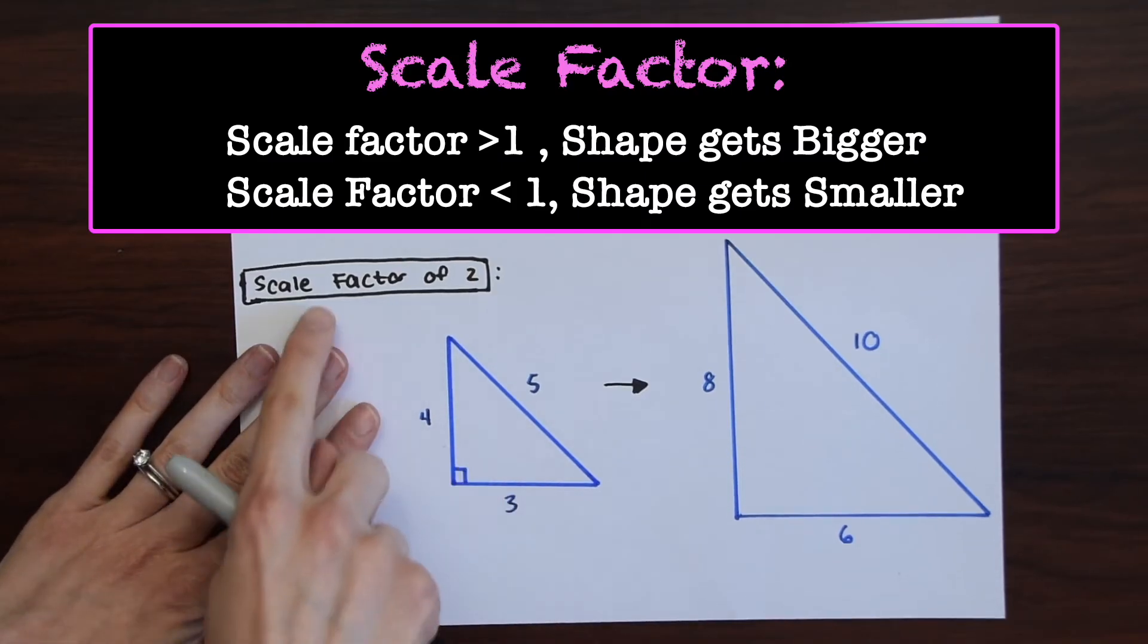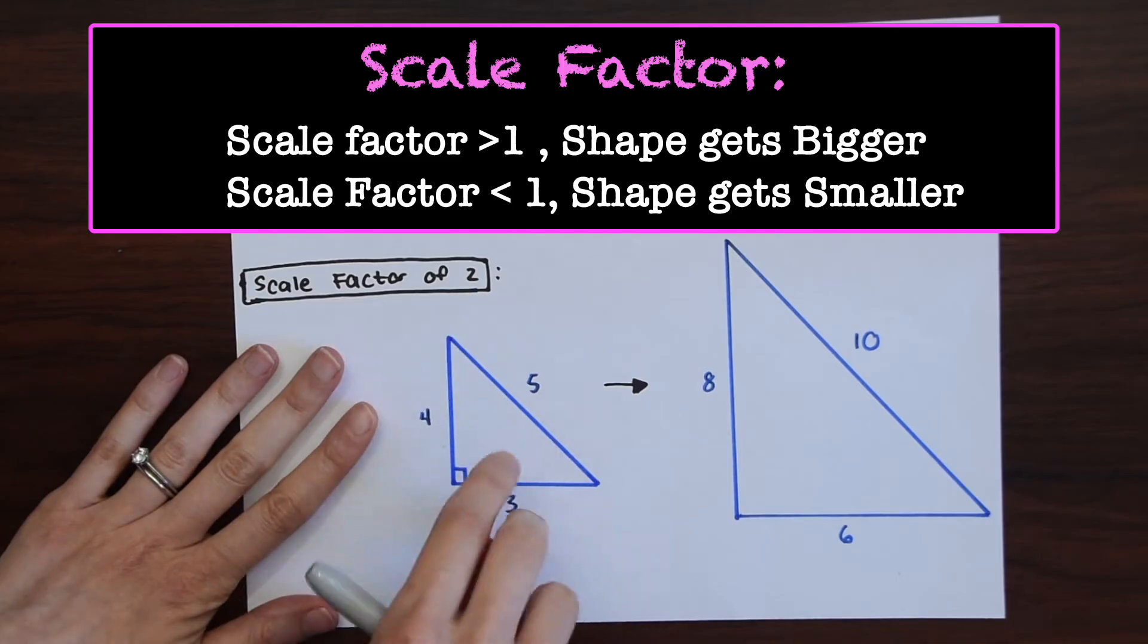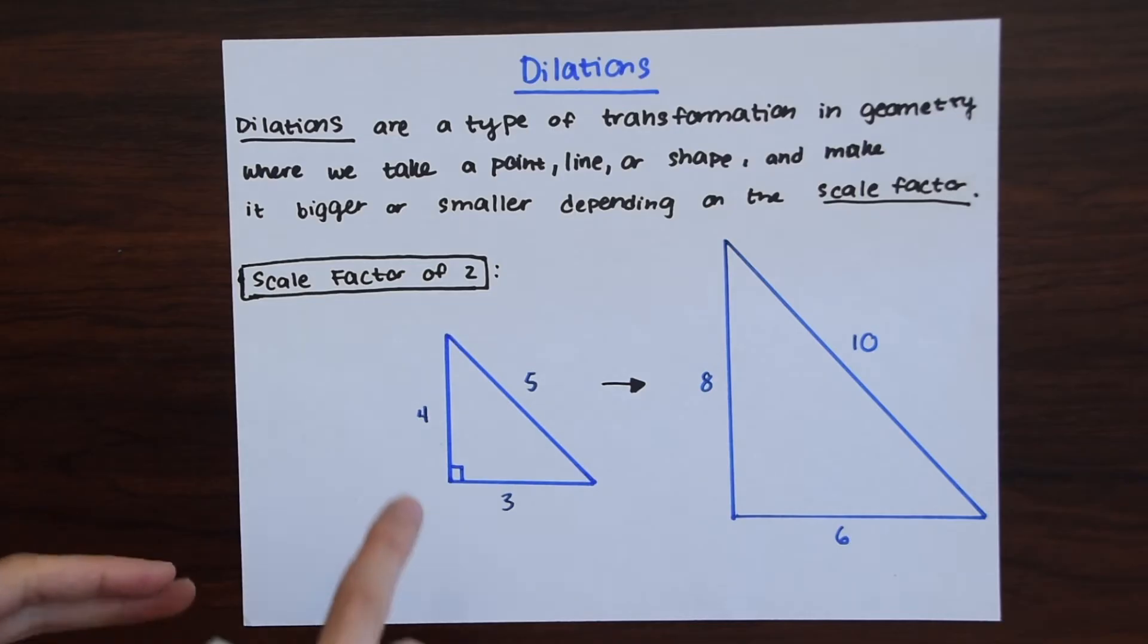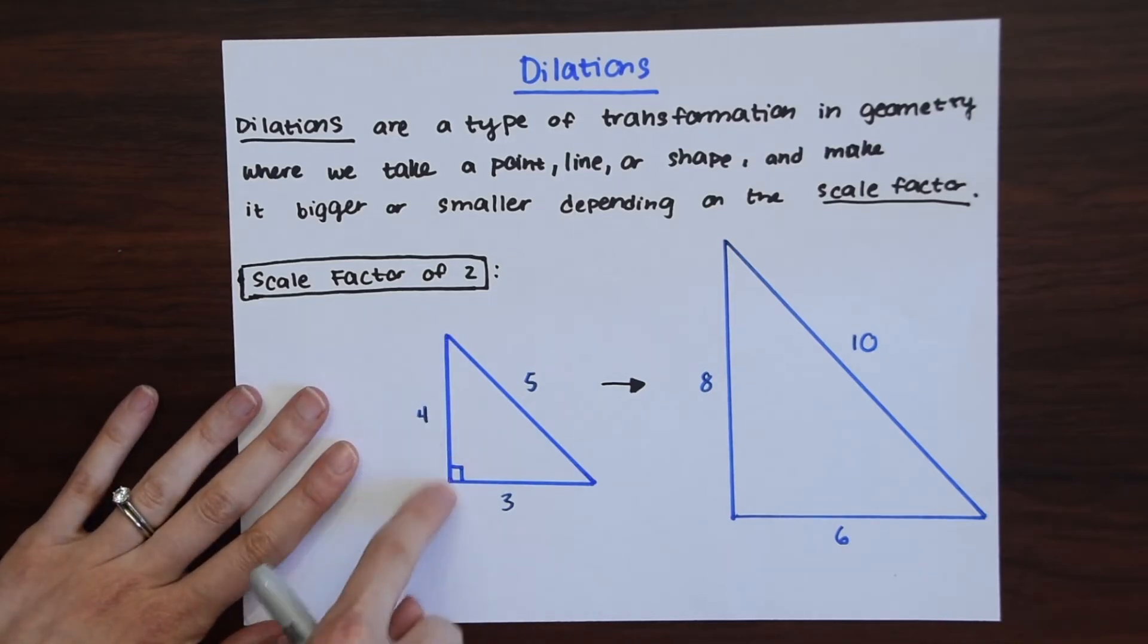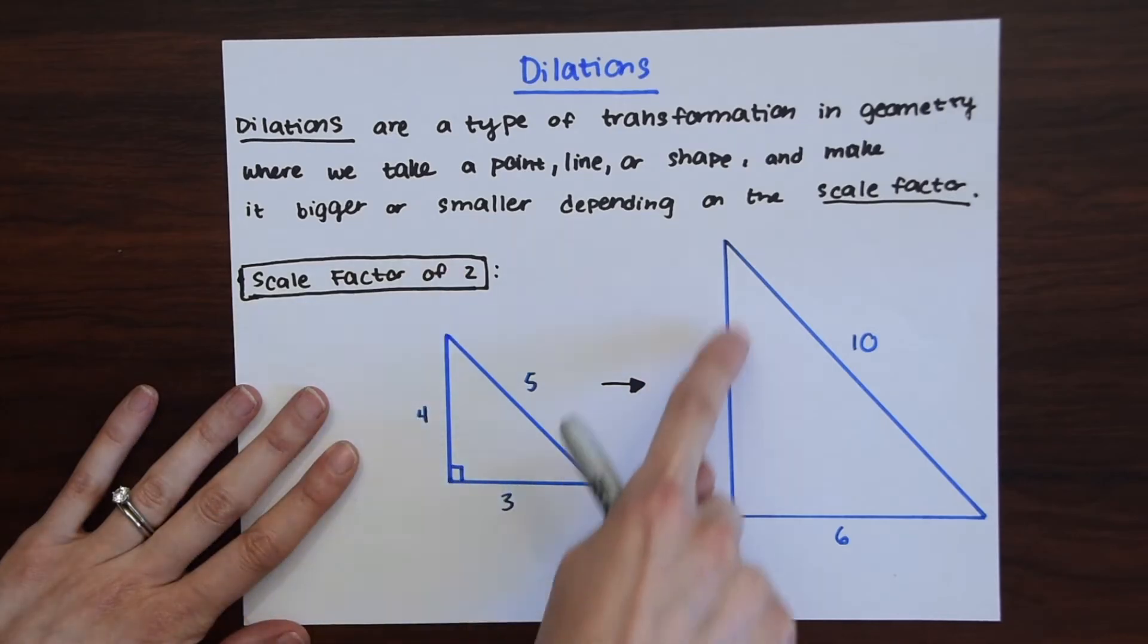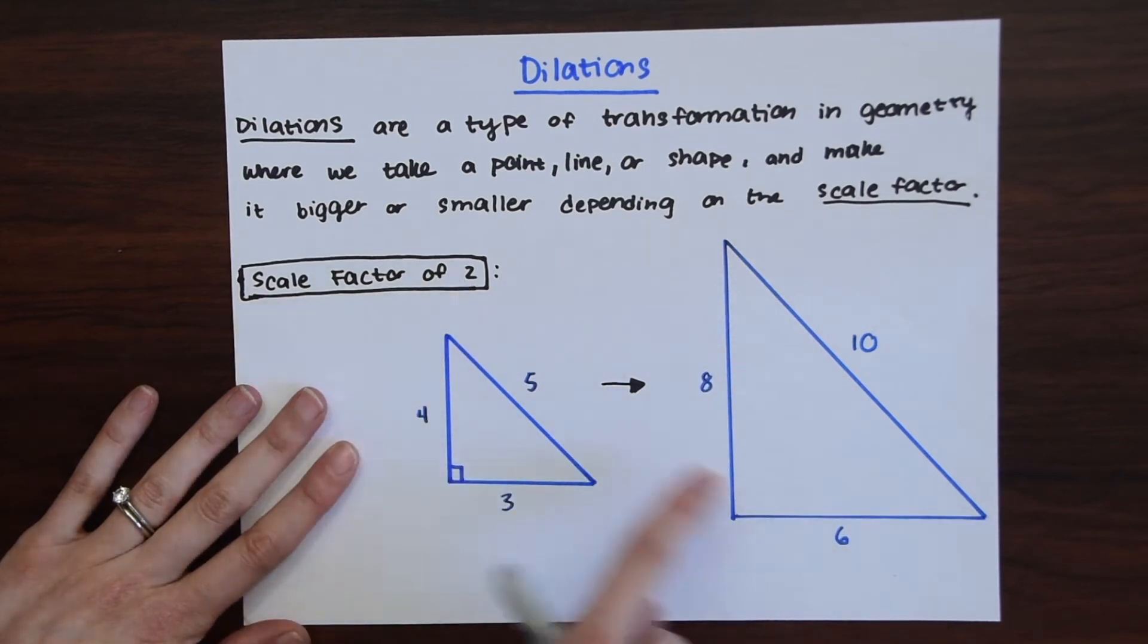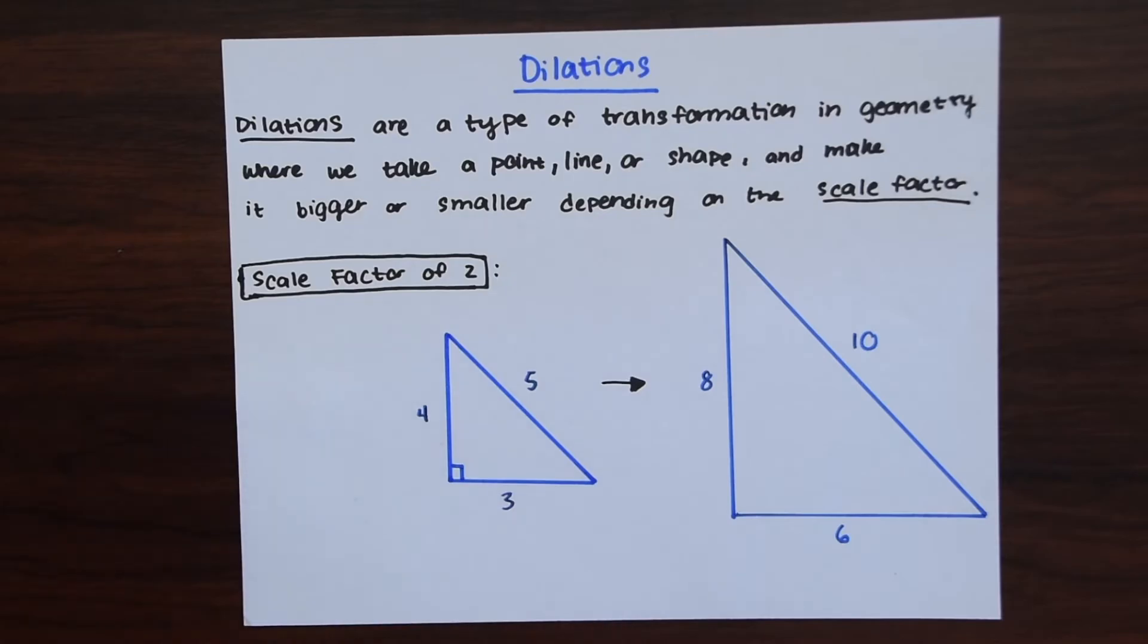So you could see here we have this example where the scale factor is 2 and we go from this small triangle and we get this bigger triangle. You could see that we multiplied each length times 2, the scale factor. So 4 times 2 is 8, so now its new corresponding length is 8. 5 times 2 is 10 and then 3 times 2, the scale factor, is 6. So that's how we dilate something, we make it bigger or smaller.